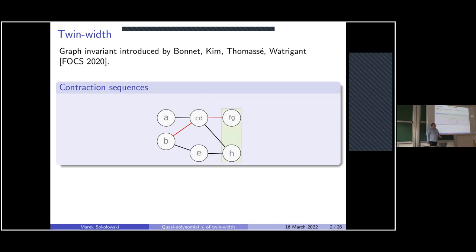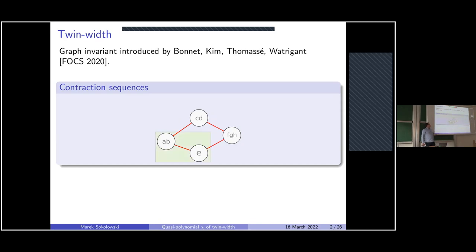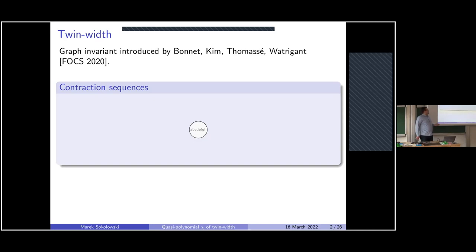We contract fg and h: they have different connections towards e so that becomes a red edge, and fg already has a mixed connection towards cd, so the composite vertex inherits that. Then we contract a with b, yielding red connections towards cd and e. Contracting ab with e, then ab with fgh, and finally one last contraction gives a single vertex graph — the end of the contraction sequence.